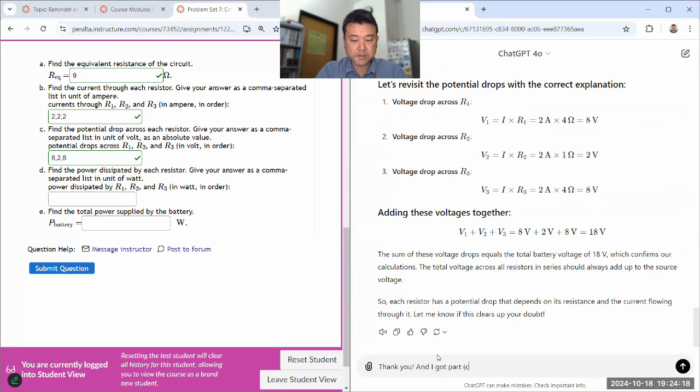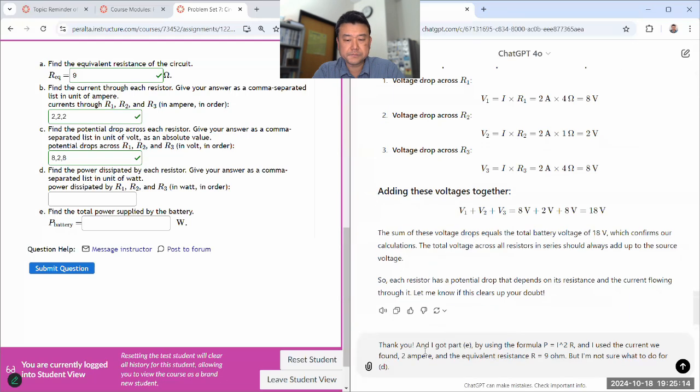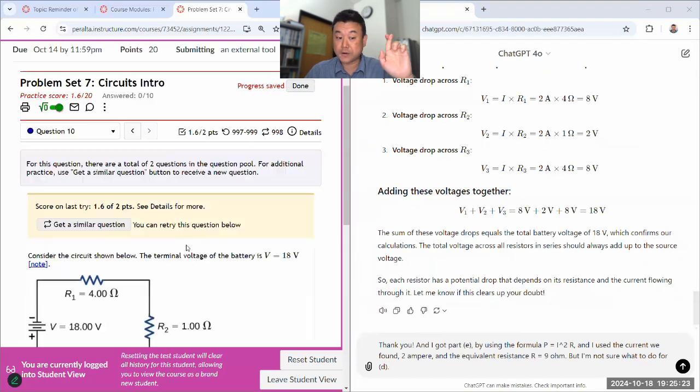Thank you. I got part E by using the formula power is equal to, 3 times I. 3 times I. Okay. No. Let me use I squared R. It's super inefficient for part E, but let me do it anyway. And I use the current. If 2 ampere and the equivalent resistance R is equal to, R is equal to 9 ohm. But I, not sure, oh, what to do for. Yeah. This is slightly. So let me actually do this calculation. 4 times 9. 36 watt. Hopefully that's correct. Yes.